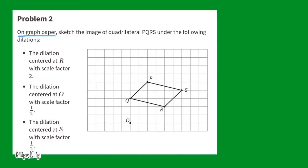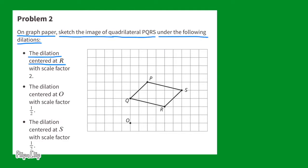Problem number 2. On graph paper, sketch the image of quadrilateral PQRS under the following dilations. The dilation centered at R with scale factor 2: locate point R, and since it's a scale factor of 2, multiply the distance between R and each other point by 2. Start at R, go twice the distance past S, then twice the distance past Q, then twice the distance past P. Draw and connect the new points — this shows the dilation of quadrilateral PQRS with a scale factor of 2.